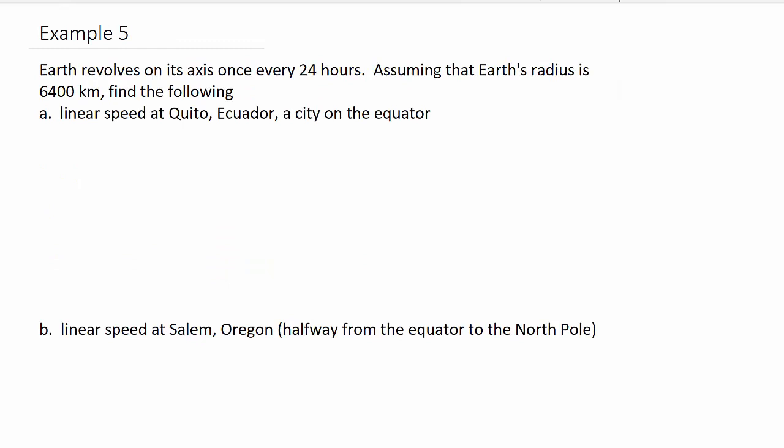Let's look at the fifth example on linear velocity. This one has two parts. This one might be a little tricky down here, but we'll see what we can do. Earth revolves on its axis once every 24 hours. Assuming that Earth's radius is 6400 kilometers, find the following: linear speed at Quito, Ecuador, a city on the equator.